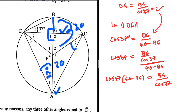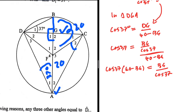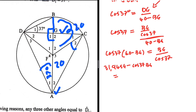I think we can cancel cos 37 from both sides, but let me just multiply out. Cos 37 times 40 gives approximately 31.9454. So we have 31.9454 minus cos(37)·BG equals BG divided by cos 37. Cos 37 is approximately 0.7986.